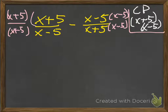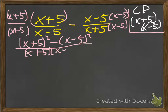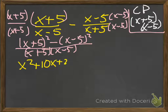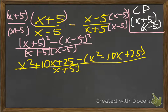Now, x plus 5 times x plus 5 is x plus 5 squared, and then minus x minus 5 squared for the same reasons. That's all over our common denominator of x plus 5 times x minus 5. Multiplying out the numerator: that's x squared plus 10x plus 25, minus the entire quantity x squared minus 10x plus 25, all over the common denominator of x plus 5 times x minus 5.